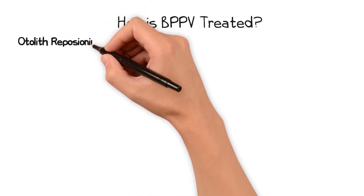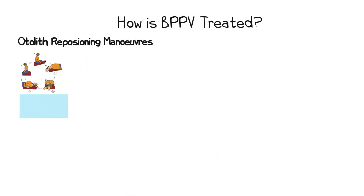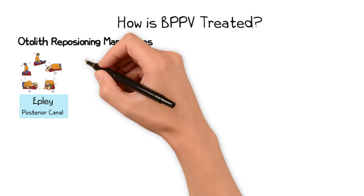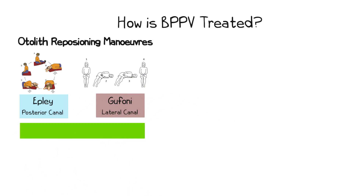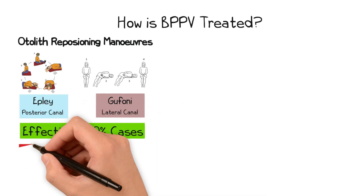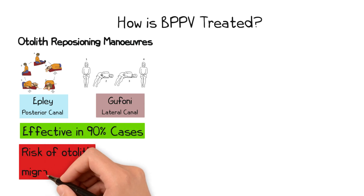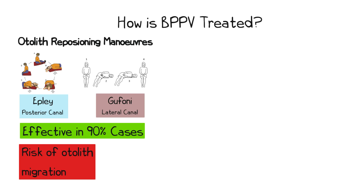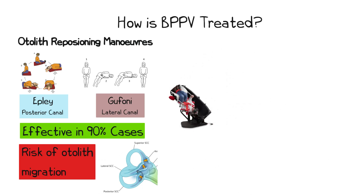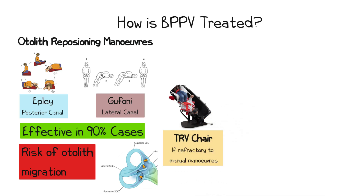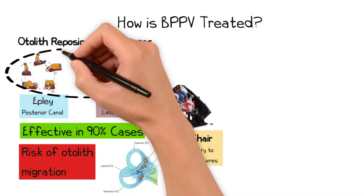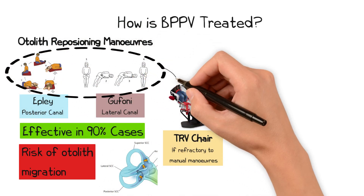The majority of patients can be treated with an otolith repositioning manoeuvre such as the Epley manoeuvre for posterior BPPV, or a Guffoni manoeuvre for lateral semicircular canal BPPV. These are extremely effective treatments and can resolve symptoms in over 90% of cases. There is a slight risk of a displaced otolith migrating into another canal during these manoeuvres, converting the problem from a posterior to a lateral semicircular canal BPPV. If symptoms remain refractory, repeating these with the aid of a TRV chair can help — a specialised piece of apparatus securing the patient before moving them through specific planes of movement aligned with the affected semicircular canal.